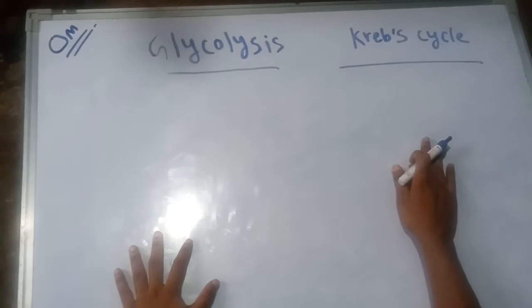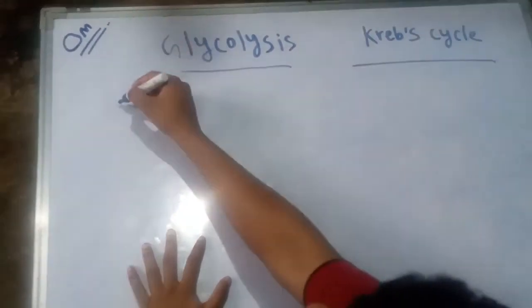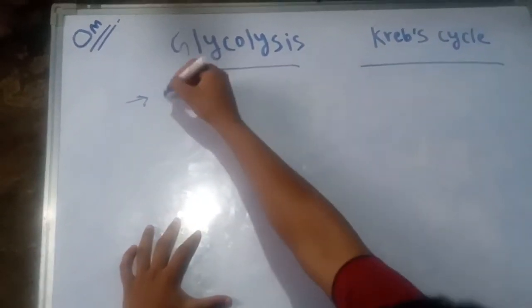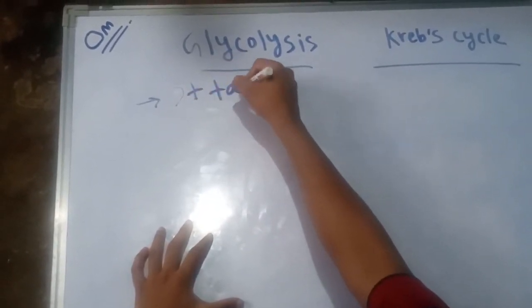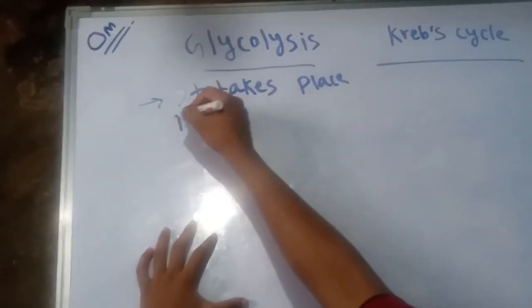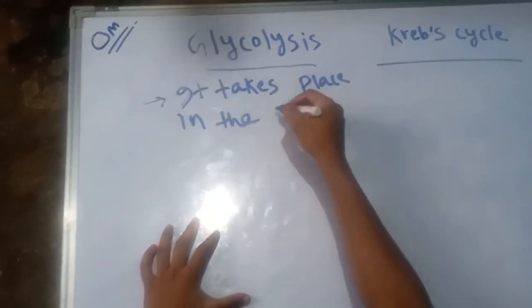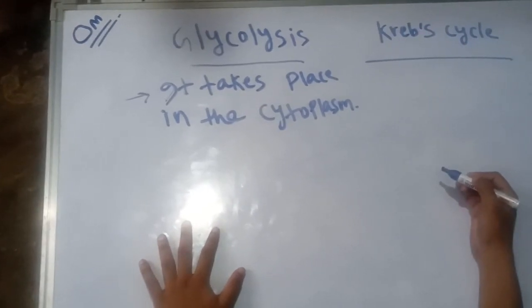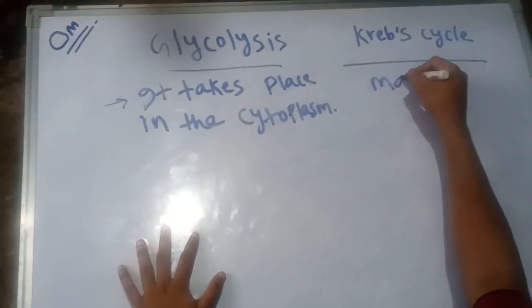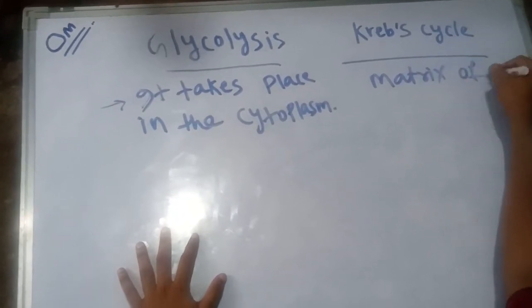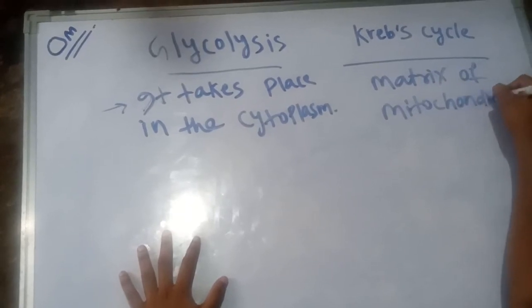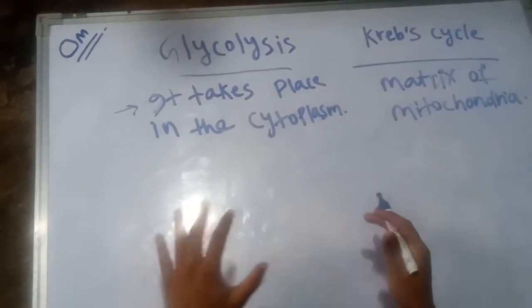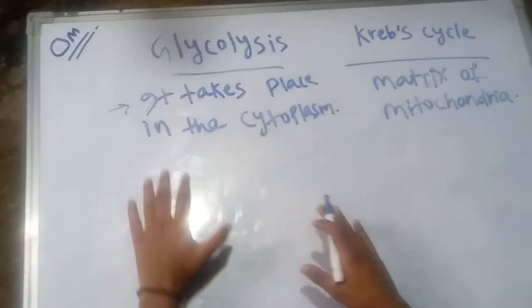The first difference: glycolysis takes place in the cytoplasm, whereas in the case of Krebs cycle, it takes place in the matrix of the mitochondria. So this is the first basic difference — glycolysis occurs in the cytoplasm and Krebs cycle occurs in the mitochondria.